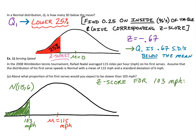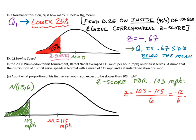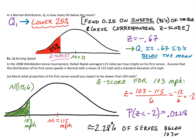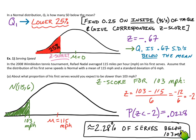The z-score for 103 miles per hour: we take 103, subtract the mean of 115, and divide by the standard deviation of 6, which gives us negative 2 — meaning we're two standard deviations below the mean. Looking up negative 2 on the z-score chart, the proportion of observations less than a z-score of negative 2 is 0.0228. That represents the percent of serves Rafael Nadal served below 103 miles per hour.